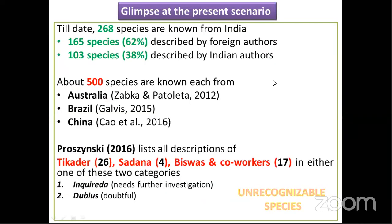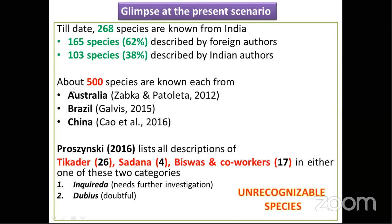To have a glimpse of the present scenario: till date, about 268 species are described and accepted from India. Of these, 165 species comprising 62% have been described by foreign authors, mainly from European regions. About 103 species comprising 38% have been described by Indian native authors. This is actually very low compared to other biodiverse-rich regions like Australia, Brazil, and China, where about 500 species each are known.